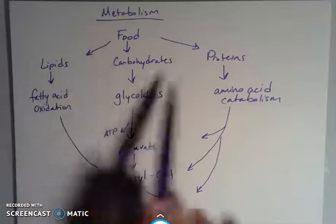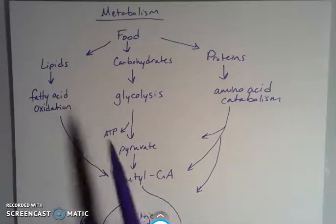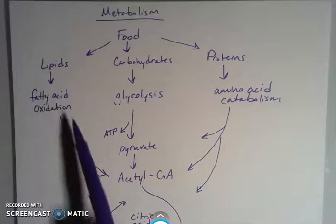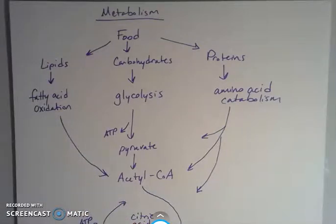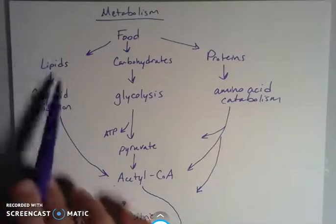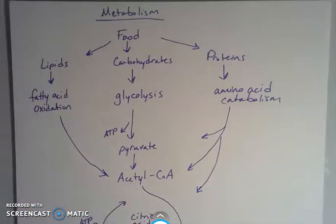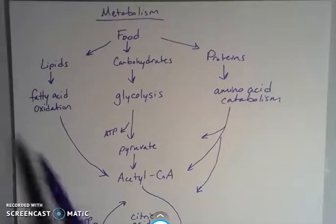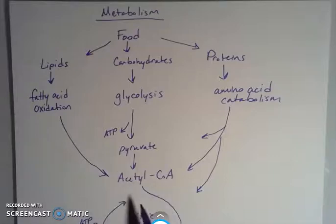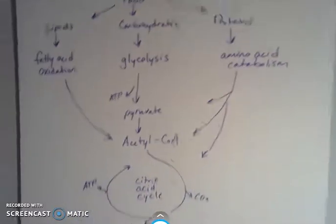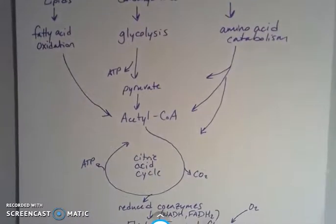Food can be put into different categories. Let's just focus on those that have pretty hefty metabolic pathways. Lipids undergo fatty acid oxidation, and there's something called the urea cycle that I'll talk about in another video. Fatty acid oxidation allows for the production of acetyl-CoA, and then acetyl-CoA can go into the citric acid cycle.